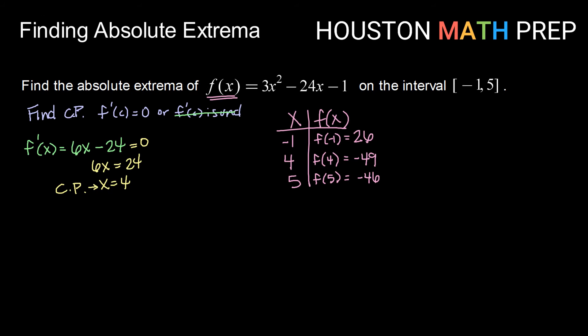Alright, finally we want to compare those values. The largest y value will be our absolute maximum, and the smallest y value will be our absolute minimum. So I can see that my smallest y value is here at -49. So my absolute minimum occurs at the point (4, -49).